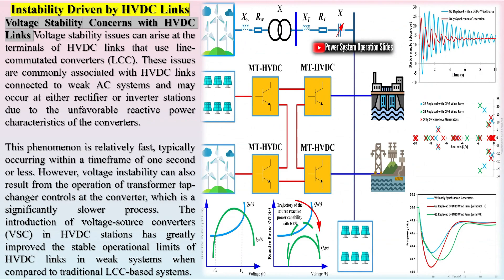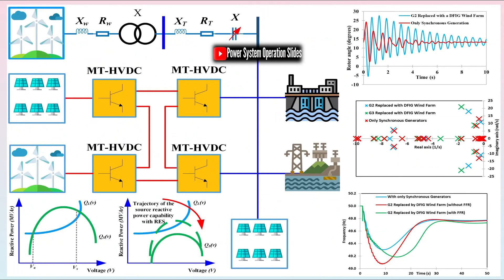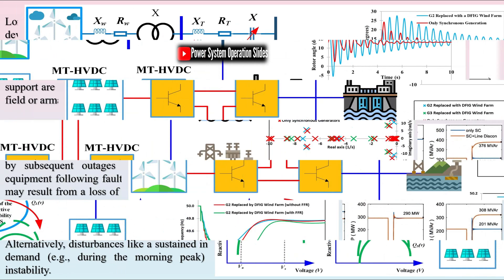The overall behavior of CIGs is shaped by the dynamic characteristics of the PLL, inner current control loops, and higher-level control strategies. These dynamics span a broad range, from high-frequency electromagnetic phenomena in the kilohertz range to slower voltage and frequency stability issues in the hertz range.